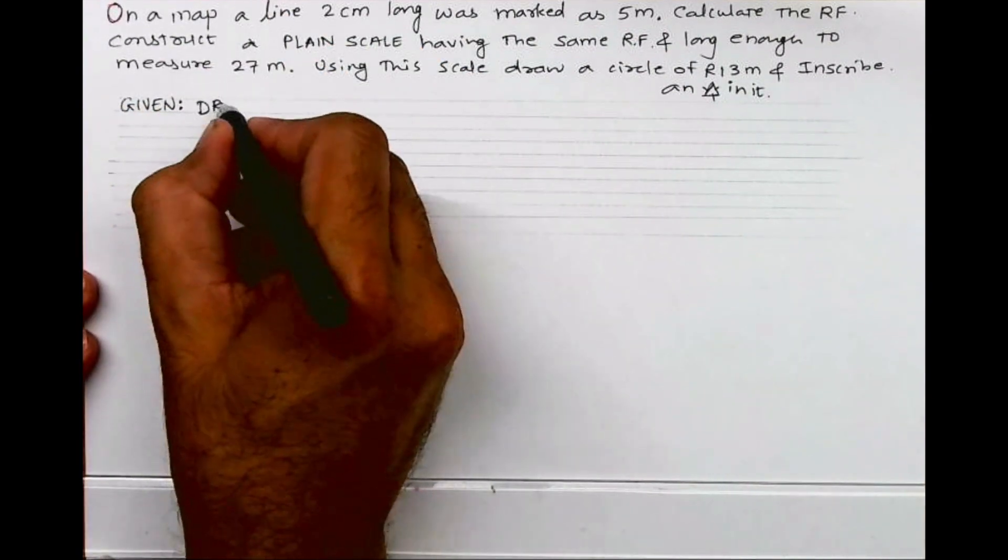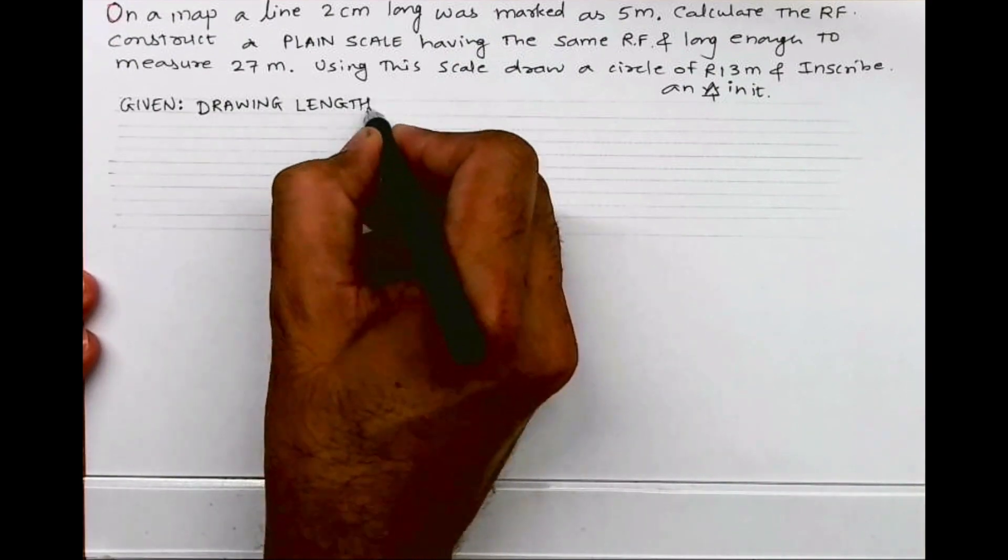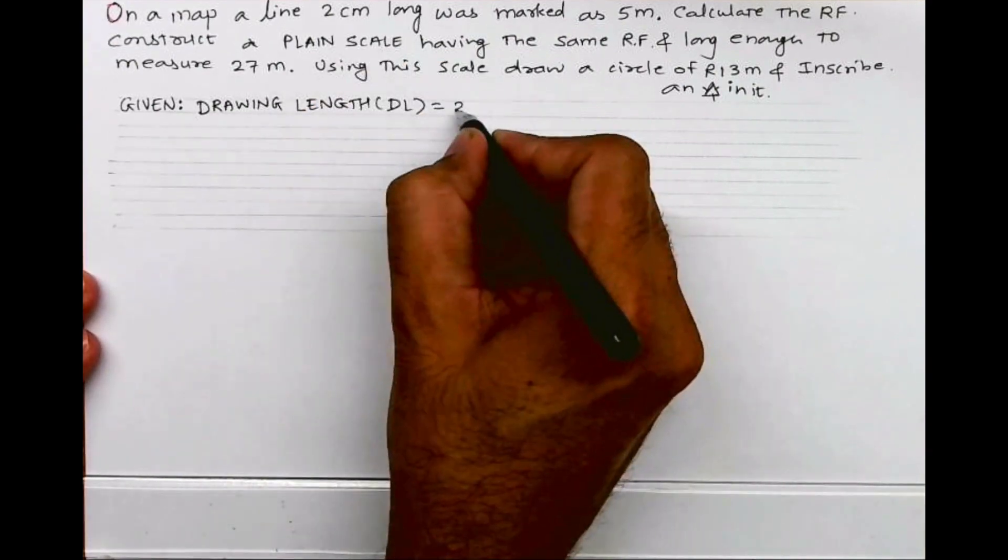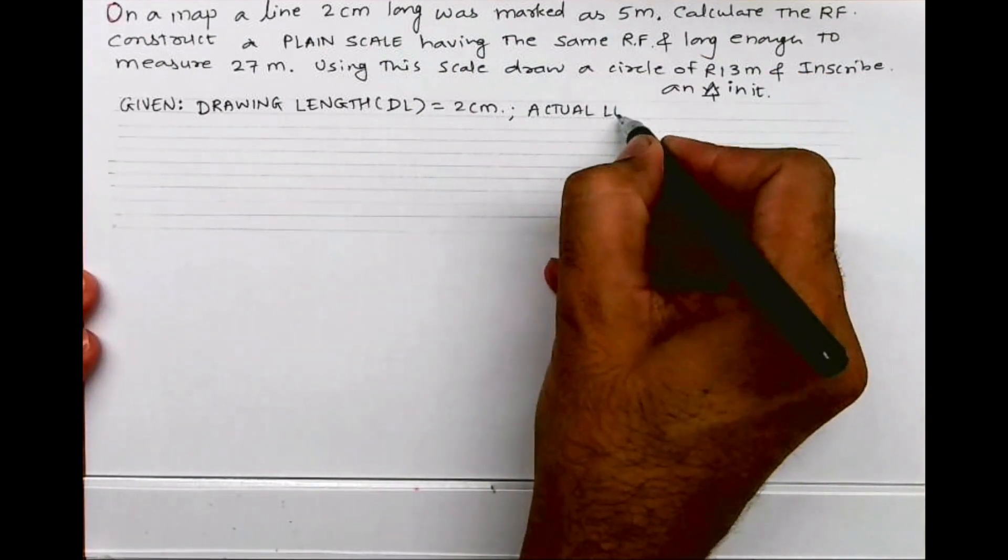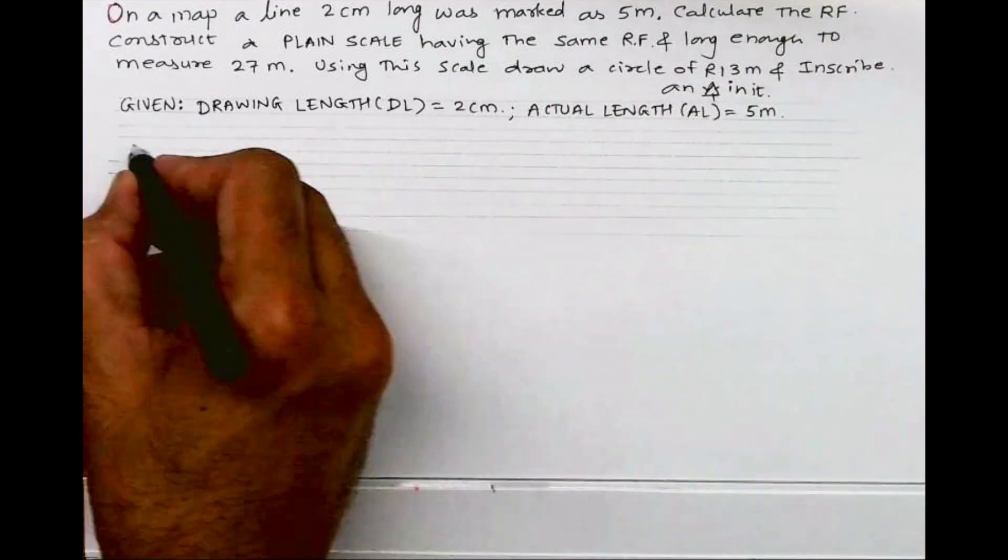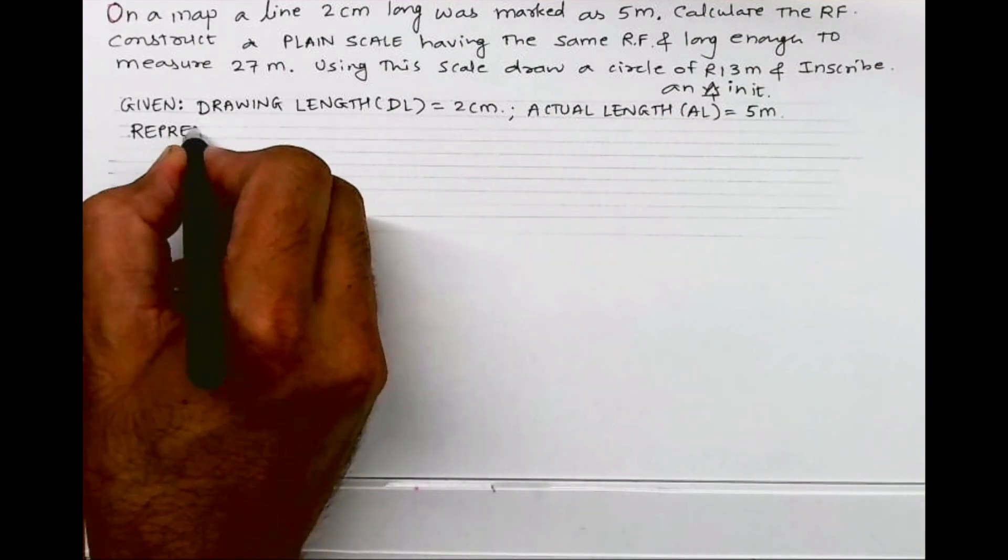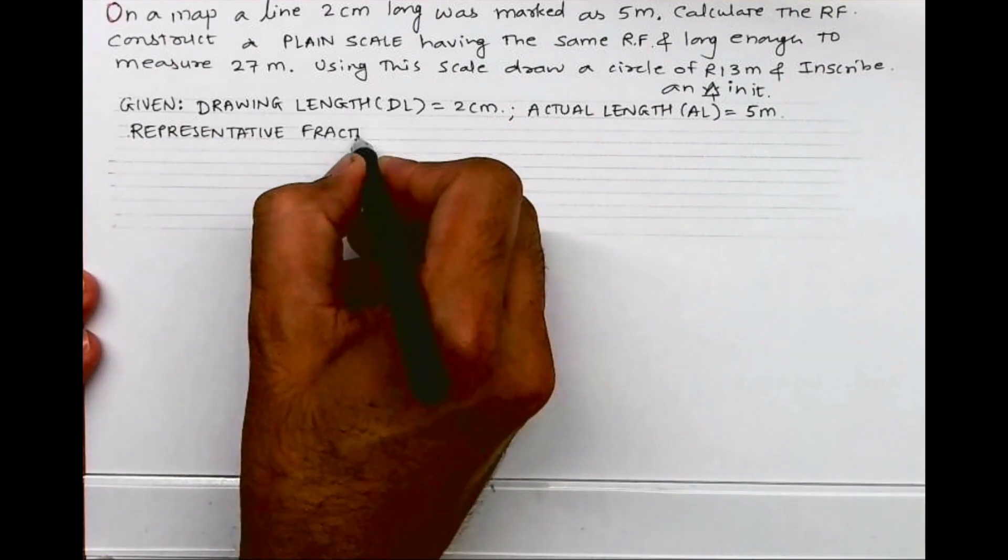First we will write given data, which is drawing length. This is ICSE 2023 exam paper sum. So drawing length is 2 cm, actual length is 5 m. I know the formula: representative fraction equals drawing length upon actual length.